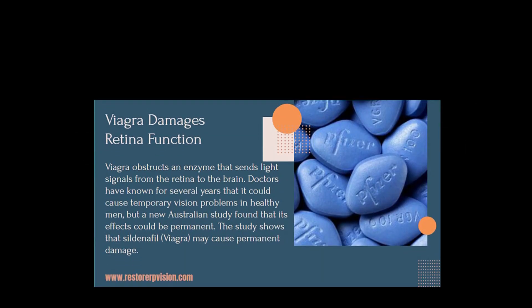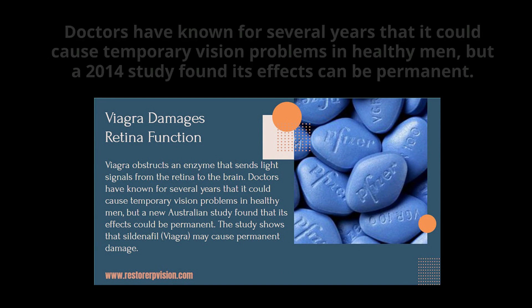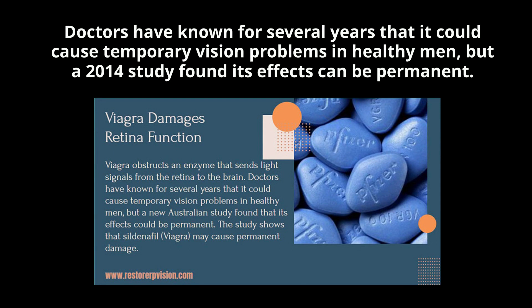Drugs should be avoided. Do not take impotence drugs such as Viagra. Viagra blocks formation of an enzyme that transmits light signals from the retina to the brain. Doctors have known for several years that it could cause temporary vision problems in healthy men, but a 2014 study found its effects can be permanent.